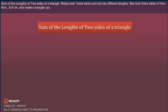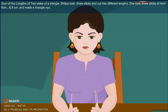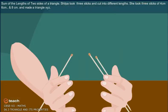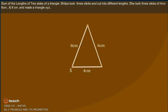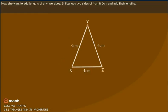Sum of the Lengths of Two Sides of a Triangle. Shilpa took three sticks and cut them into different lengths. She took three sticks of 4 cm, 6 cm and 8 cm and made a triangle XYZ. Now she wants to add lengths of any two sides.